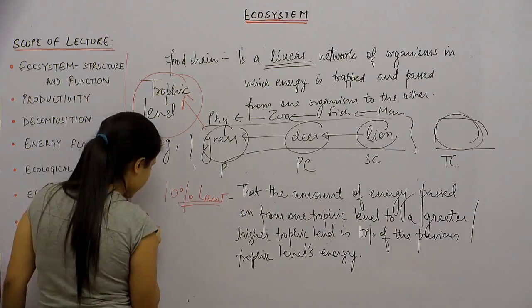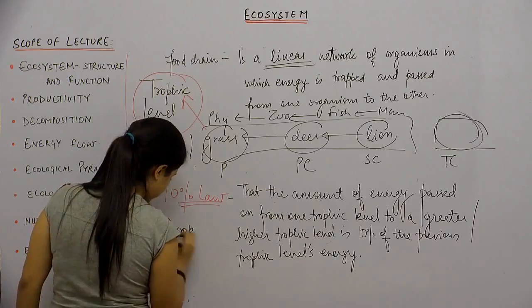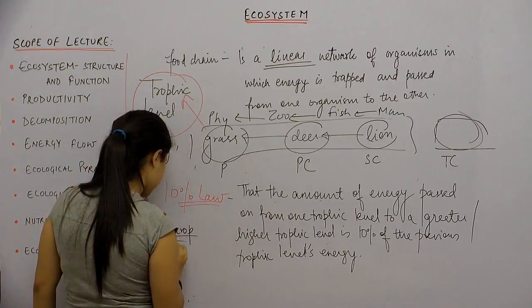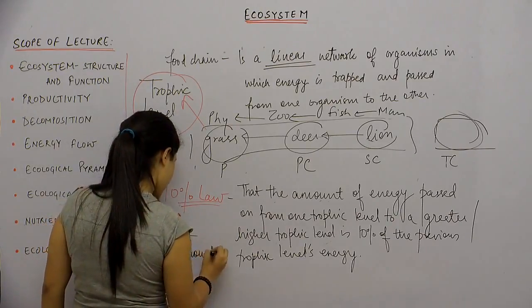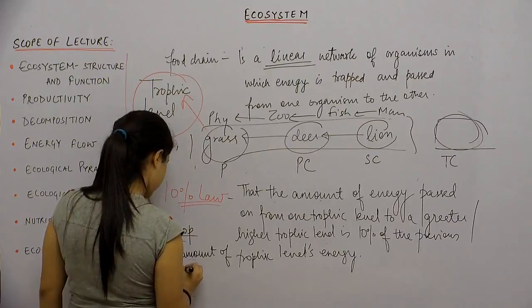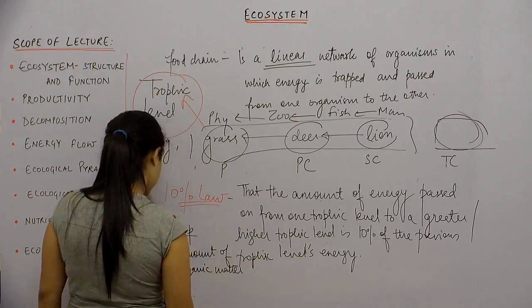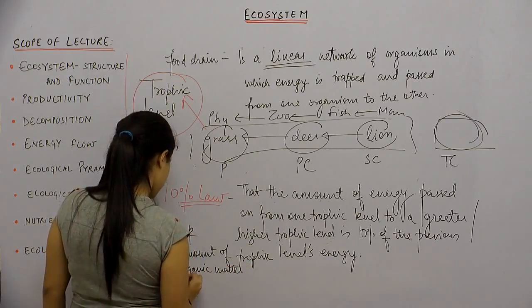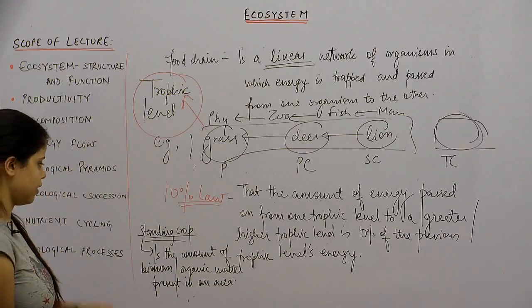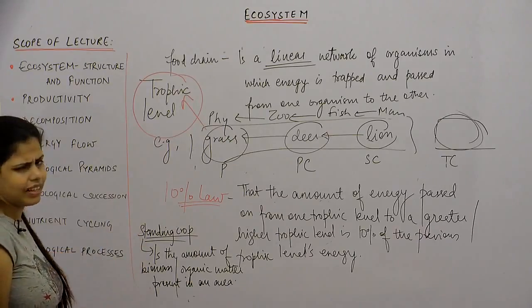Let me define what a standing crop is — this is also an important term. The standing crop is the amount of biomass or organic matter present in an area. Standing crop is really straightforward.